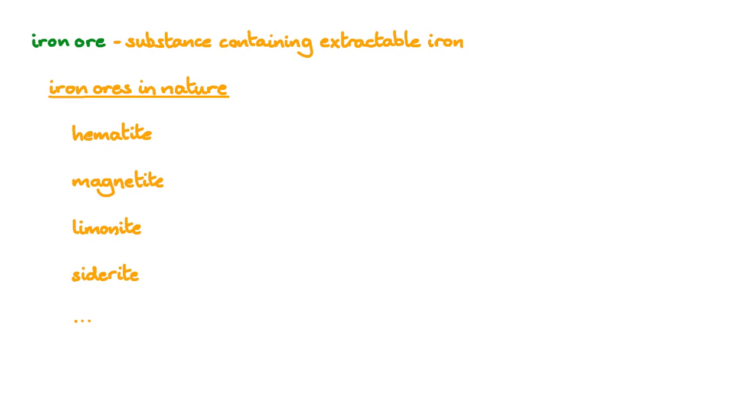There are many compounds of iron that can be found in nature. But the one that's most common for extracting iron, and the one that we'll feature in this video, is hematite. Hematite is a naturally occurring form of iron 3 oxide, Fe2O3, and it's about 70% iron by mass.